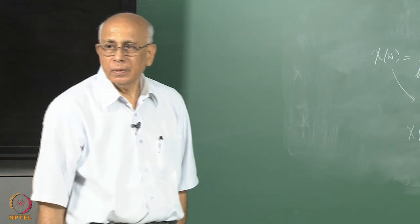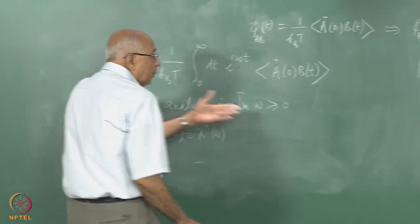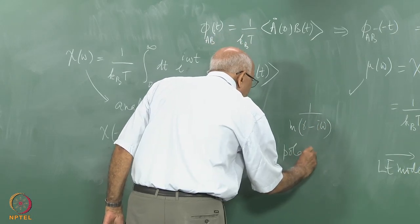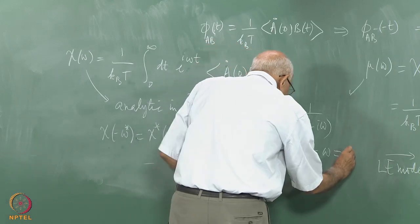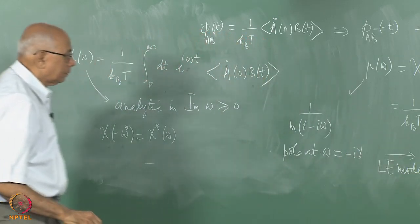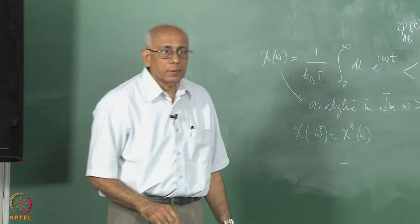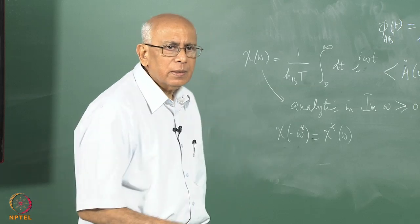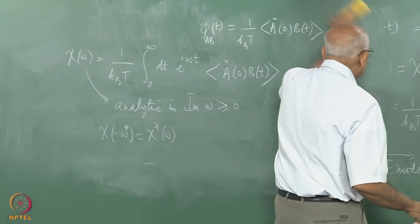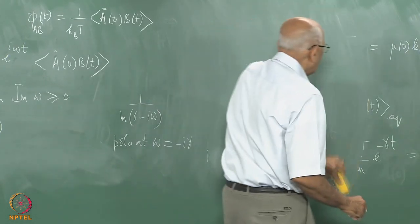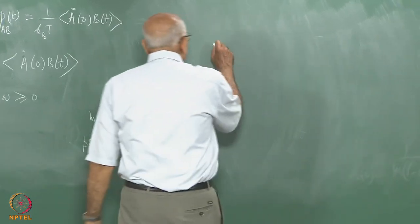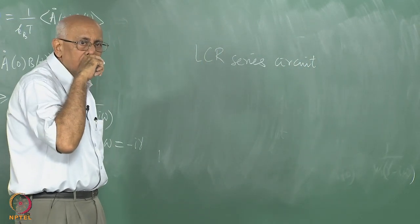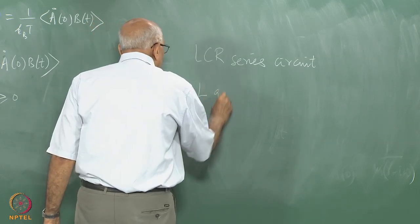The example we looked at, μ(ω) = 1/[m(γ − iω)], has a pole at ω = −iγ — it is in the lower half plane. For a slightly more general system, let us put an LCR circuit and see what happens. The equation of motion for an LCR series circuit is L·q̈ + R·q̇ + q/C = V_applied.